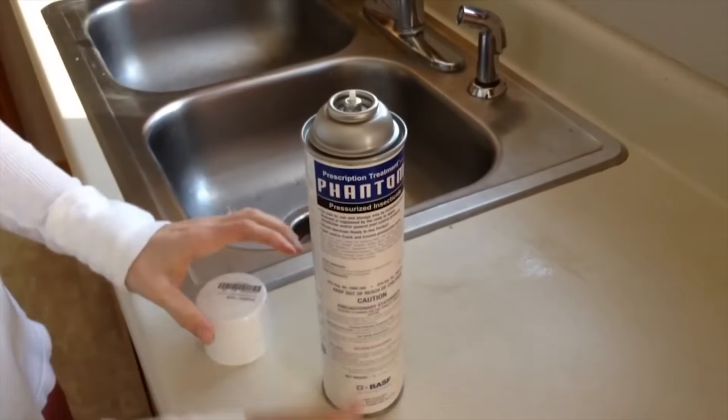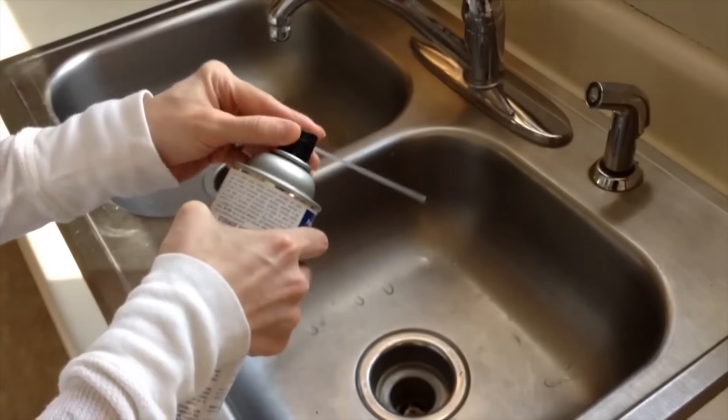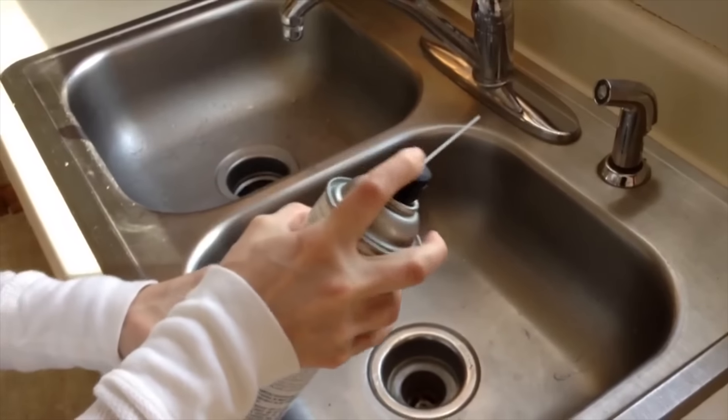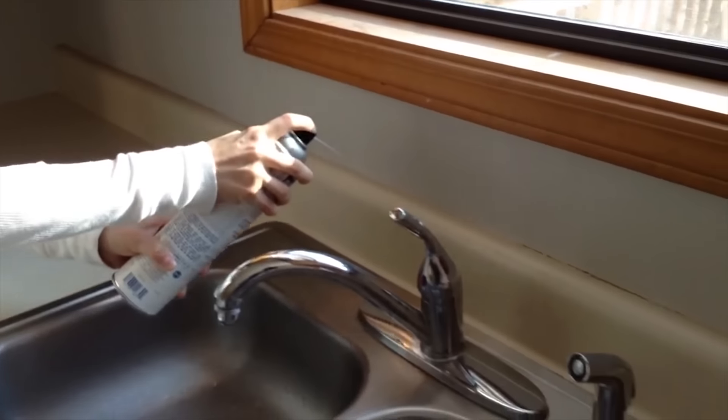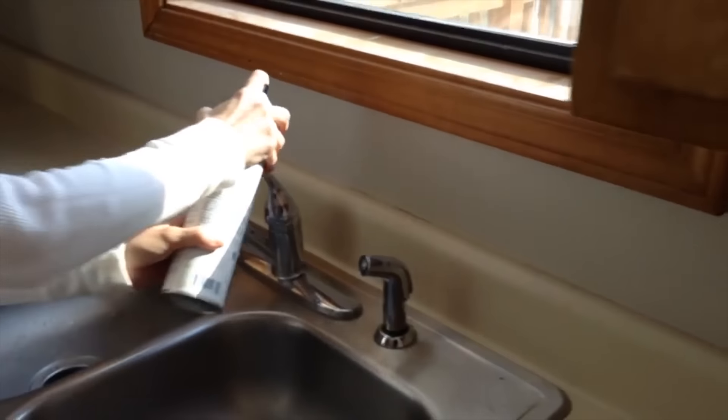Non-repellent ant sprays are super easy to use. Simply insert the straw applicator included with the spray can and apply a steady stream directly into cracks and crevices in areas where you have noticed ant activity.